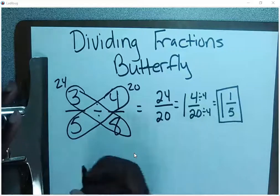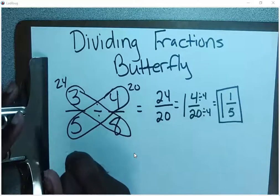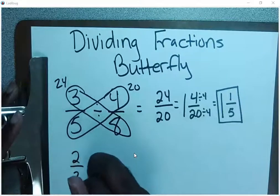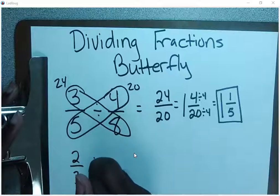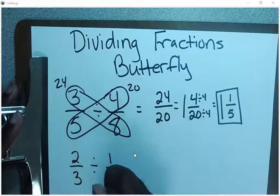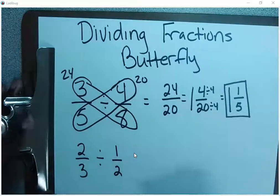Let's try another problem. Let's go with two-thirds divided by one-half. Once again, we're going to butterfly multiply.